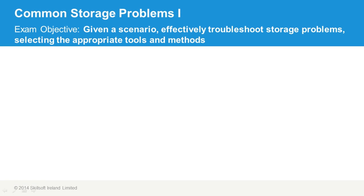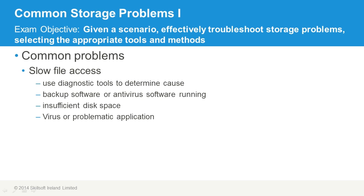Regardless of how robust your storage solution is, you're likely to encounter problems at some point in time. We're going to take a look at some of the common problems, and whether you're using a single internal hard drive or the most robust SAN configuration, the same problems can arise. Among those common ones, slow file access is definitely one of the things that tends to draw attention to itself because your performance obviously suffers.